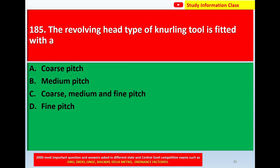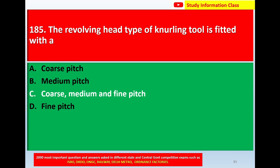Next, question number 185: The revolving head type of knurling tool is fitted with — option A: coarse pitch, option B: medium pitch, option C: coarse, medium, and fine pitch, option D: fine pitch. The correct answer is option C: coarse, medium, and fine pitch.